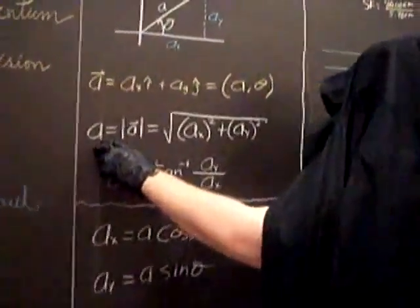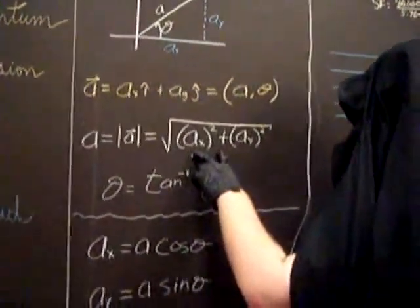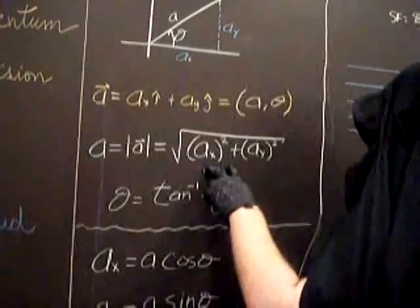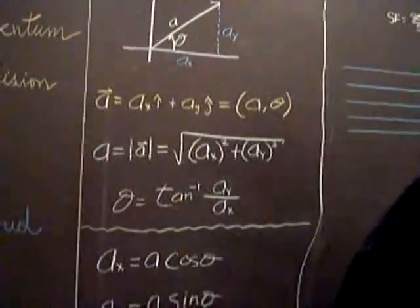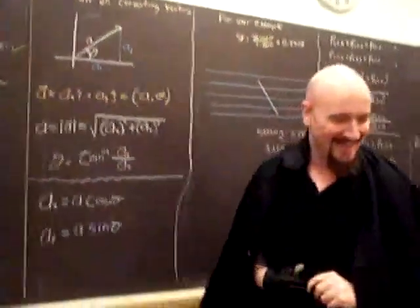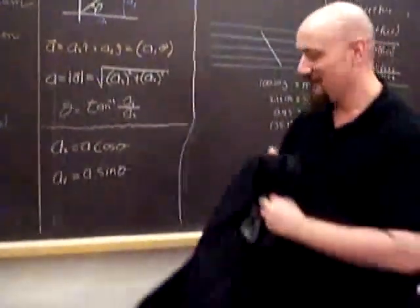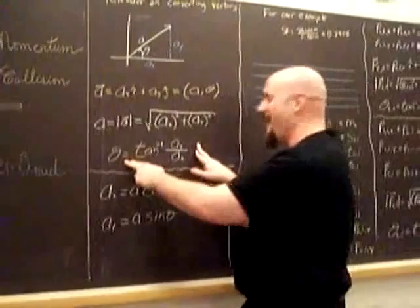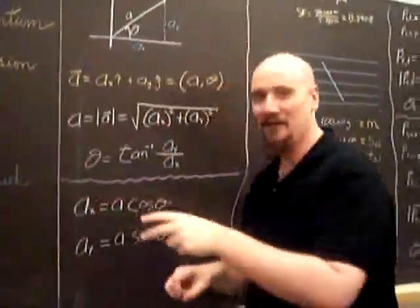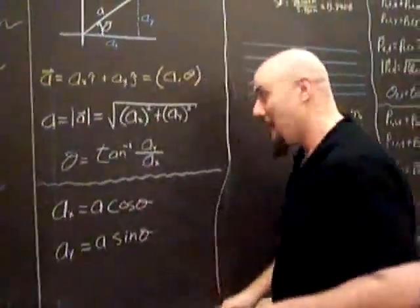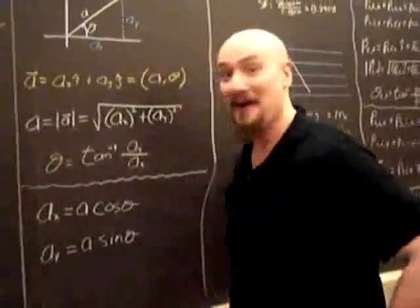If we have the Cartesian coordinates, we can find the polar magnitude by taking the square root of the sum of the squares. And if we want its angle in polar representation, we take the arc tangent of the ratio of ay over ax.